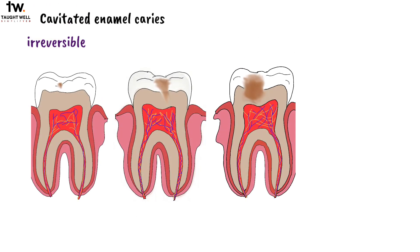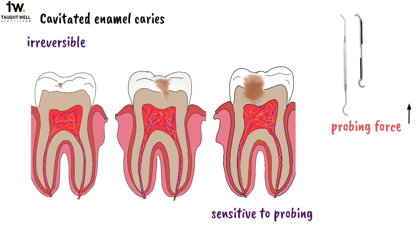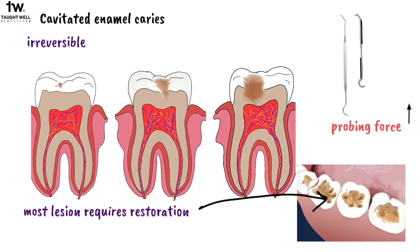Cavitated enamel caries is an irreversible lesion. Cavitated enamel lesions can be initially detected as subtle breakdown of the enamel surface, while more advanced lesions are detected as gross enamel breakdown. These lesions are very sensitive to probing and can be easily enlarged by using sharp explorers and excessive probing force. In cavitated caries, the enamel surface is broken and usually the lesion has advanced into dentin, and most cavitated caries lesions require restorative treatment.